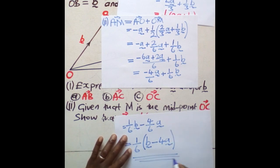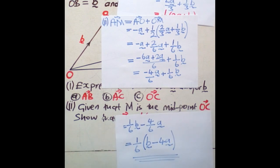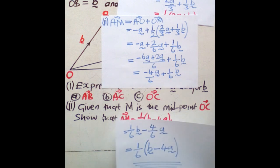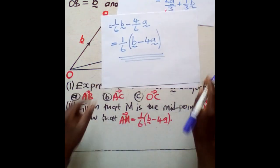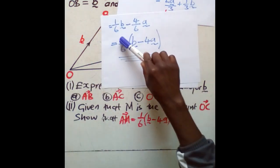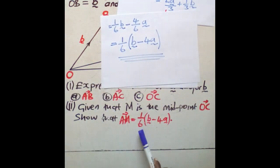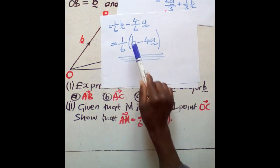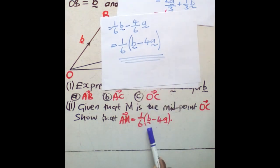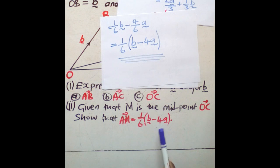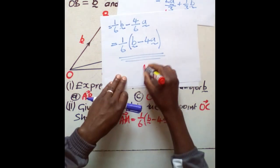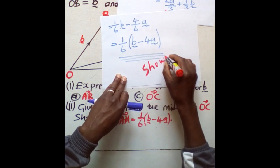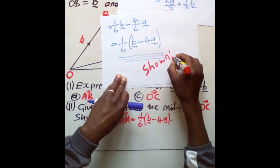If this is not similar to what we are looking for, then we have to revisit our work. So let's compare: 1/6 is the same thing that we have here. b is the same thing that we have here. Negative 4a is the same thing that we have here. Hence, shown — we have shown what they wanted us to show.